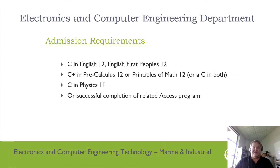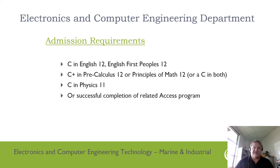The program admission requirements are listed on the screen. If you don't have those admission requirements currently, you may want to consider the related access program. There is an electronics and computer engineering technology access program that accepts students from grade 10 onwards, and you will upgrade to a grade 11 or grade 12, depending on what level you require.